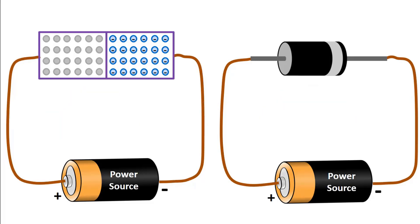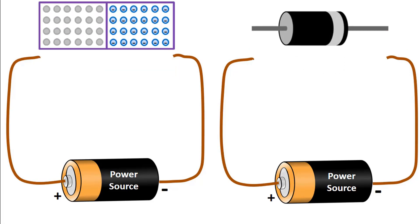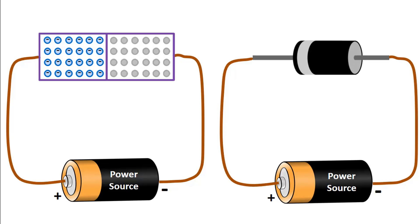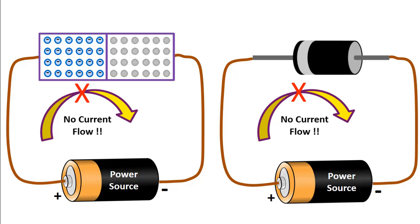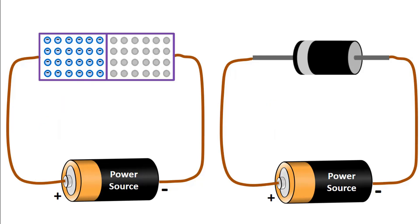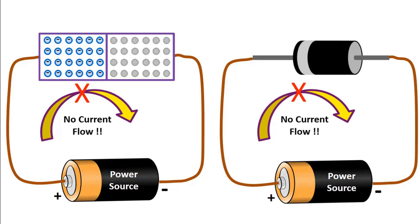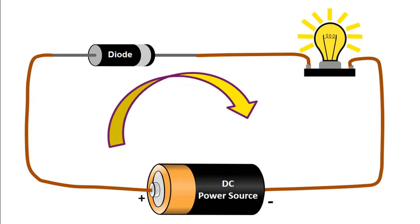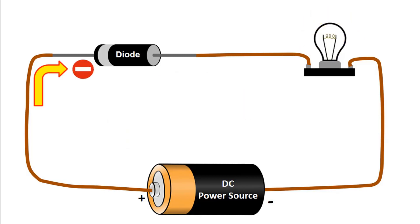So, what happens if we reverse the diode? When we connect the diode in reverse, the electrons in the n-type part of the diode will be attracted by the positive pole of the source. Therefore, there will be no electron transition to the spaces in the p-type part of the diode. Accordingly, there will be no current flowing through the circuit since there is no electron transition. The diode allows current to flow from one direction only. When the diode is connected correctly, the lamp will light as current flows through the circuit. But if we connect the diode in reverse, no current will flow and the lamp will not light.